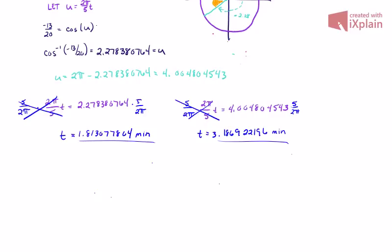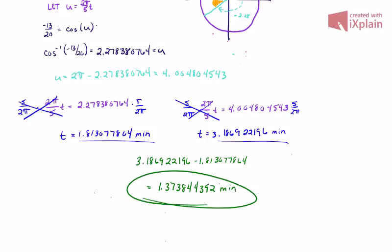So we want to know how much time we are above 35 feet. So essentially what this means is we're going to do a subtraction. So we know that if we subtract these two times, we'll uncover that we're only actually above 35 feet while on this ride for a little bit over one and a half minutes. And if you want the specifics, the number is laid out for you.